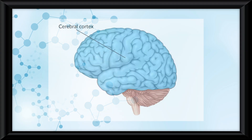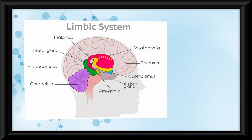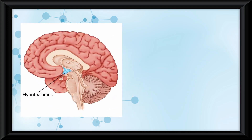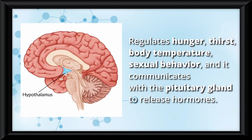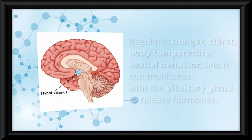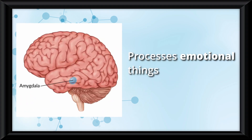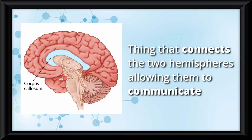The cerebral cortex is the outer layer of the brain, divided into two hemispheres. Inside it is the limbic system, which includes the thalamus — the relay station for sensory information — the hypothalamus, which regulates hunger, thirst, body temperature, and sexual behavior, and communicates with the pituitary gland to release hormones, the hippocampus, which forms new memories, and the amygdala, which processes emotional things like fear and aggression. The corpus callosum is the structure that connects the two hemispheres, allowing them to communicate.